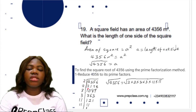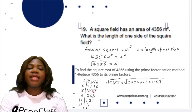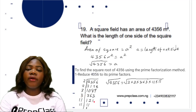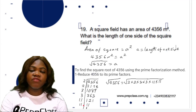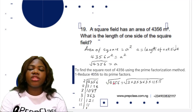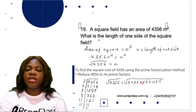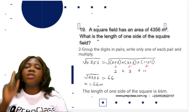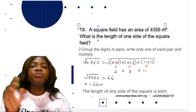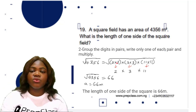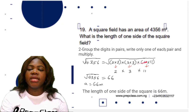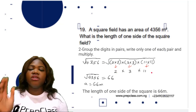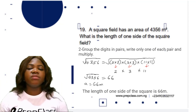2,178 divided by 2 is 1,089; 1,089 divided by 3 is 363; 363 divided by 3 is 121; 121 divided by 11 is 11; 11 divided by 11 is 1. So the square root of 4,356 equals the square root of 2 × 2 × 3 × 3 × 11 × 11. Step 2: group in pairs — (2×2), (3×3), (11×11) — then write one from each pair: 2, 3, and 11.